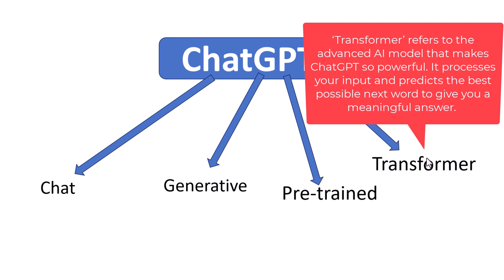The Transformer processes your input and predicts the best possible next word to give you a meaningful answer. So this is how ChatGPT works in a nutshell.